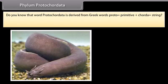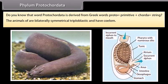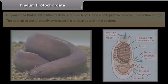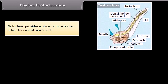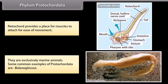Phylum Protochordata. The word Protochordata is derived from Greek words: proto, meaning primitive, plus chord, meaning string. The animals are bilaterally symmetrical, triploblastic, and have a coelom. They have a notochord, which is a long rod-like support structure that runs along the back of the animals, separating the nervous tissue from the gut. This notochord is not present at all stages of life. It provides a place for muscles to attach for ease of movement. They are exclusively marine animals. A common example of Protochordata is Balanoglossus.